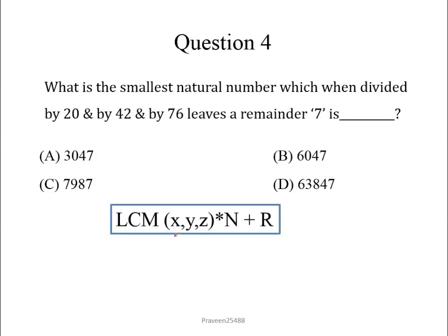You have to find the LCM of given numbers x, y, z. Here x, y, z is 20, 42 and 76 respectively. Here n is a number and r is our remainder. We will call it a constant also.